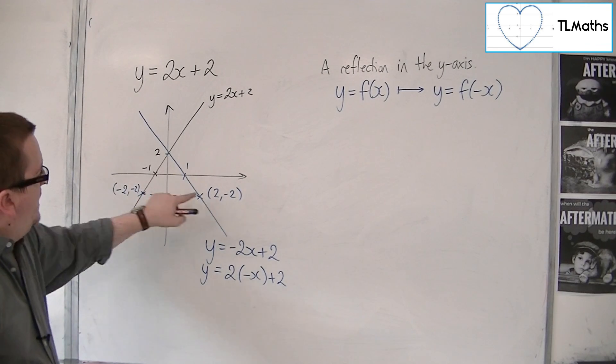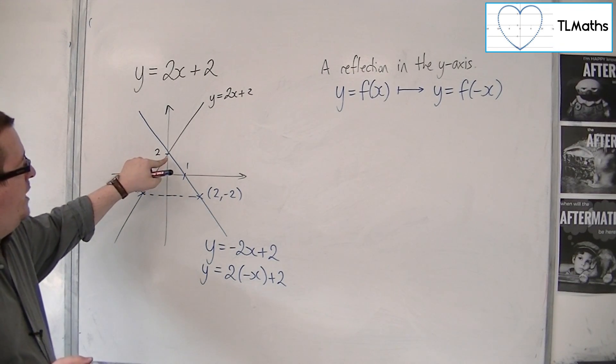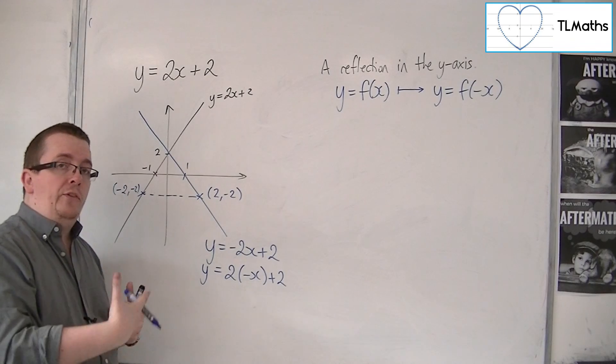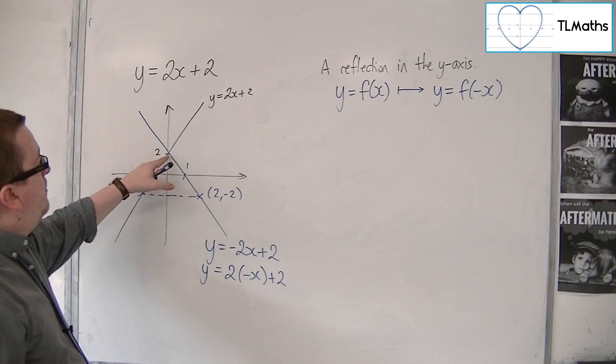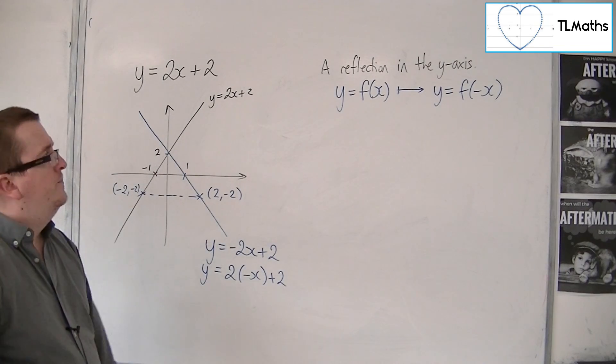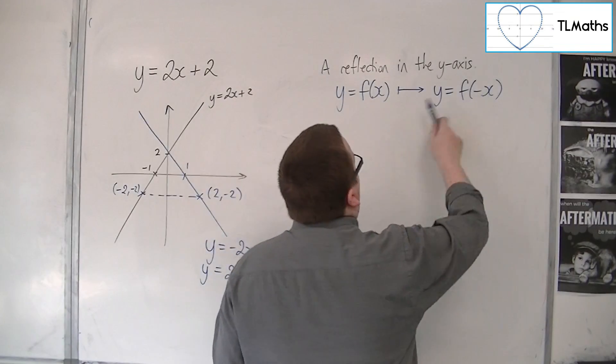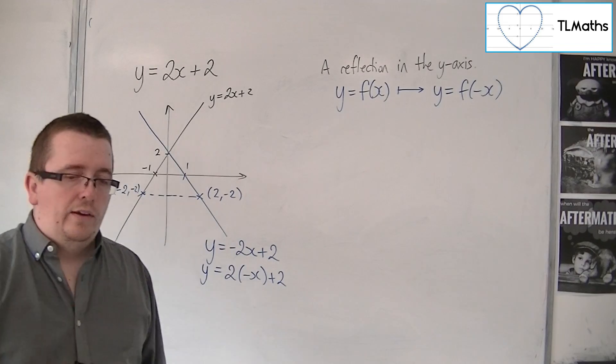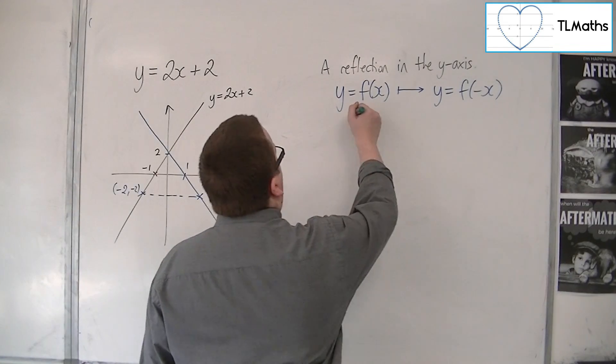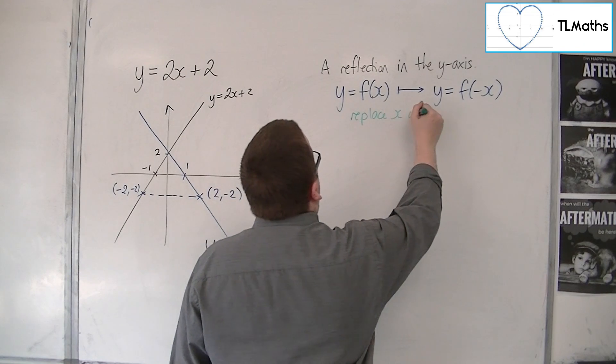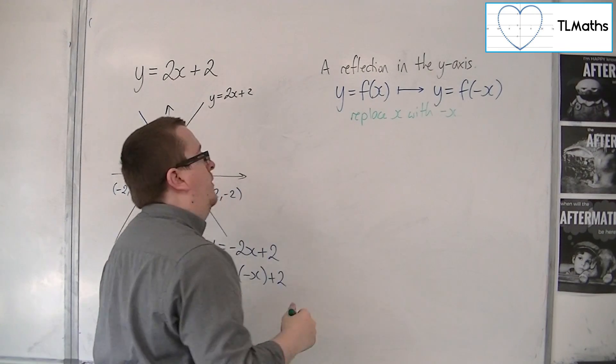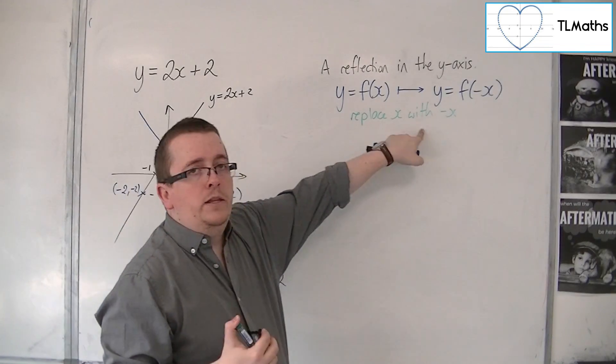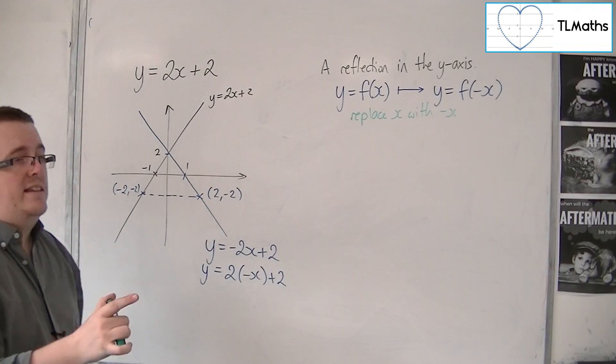OK, so all of the x coordinates have changed sign. This one was 0, 2, but obviously minus 0 and plus 0 are the same thing. So it hasn't changed that position. That spot has stayed fixed. So if you have a minus x, so in the bracket, then this is a reflection in the y-axis. So what's happened is we have replaced x with minus x. This step will allow you to transform any curve and reflect it in the y-axis, just replacing all the x's with minus x.